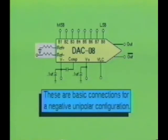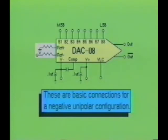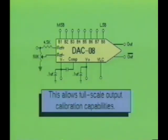This device could also be operated in a negative unipolar configuration. This is achieved by connecting the resistor feeding the positive reference input to ground, then connecting the resistor feeding the negative reference input to the negative current reference source. The resistors used at the reference inputs should always be a low-temperature coefficient, high-precision device for best overall operation. The output current of this device can also be adjusted by varying the reference input current, which allows full-scale output calibration capabilities. This is accomplished through the use of a balancing circuit.